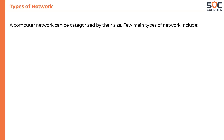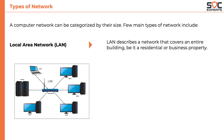A computer network can be categorized by its size. One of the main types is Local Area Network, or LAN, which describes a network that covers an entire building, be it a residential or a business property. Sometimes it is just referred to as a local network.